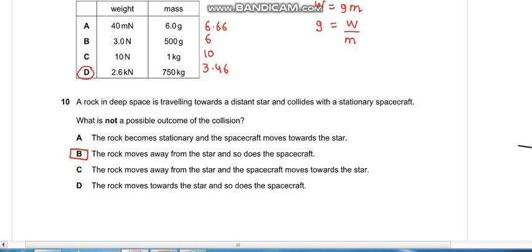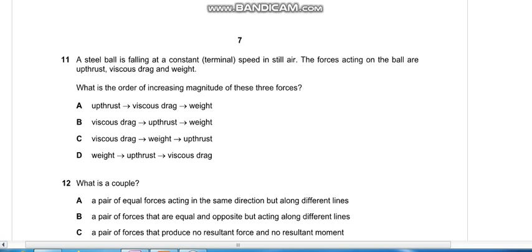Question eleven: A steel ball is falling at constant speed in still air. Constant speed means it is in equilibrium. The forces acting on the ball are upthrust, viscous drag, and weight. What is the order of increasing magnitude of these three forces? A ball is acted upon by weight. It is in equilibrium, so upthrust and drag are here. The greatest magnitude would be of weight, as it is in one direction, so either A or B.